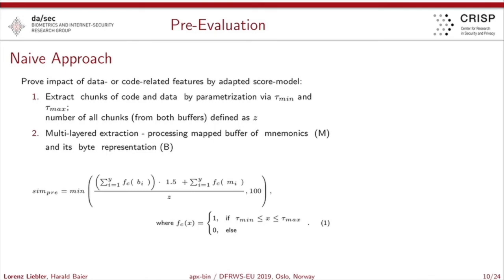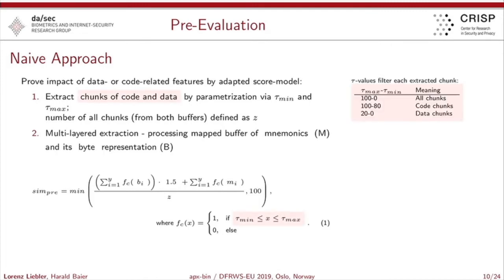We performed a pre-evaluation and introduced a very naive approach. We want to shift the focus to specific parts of extracted chunks. We parameterized the extraction phase so that we are capable of extracting only code chunks, only data chunks, or both. If we parameterize the thresholds to 100 and 0, we extract all chunks. If we parameterize 100 to 80, we focus only on code chunks. If we parameterize from 20 to 0, we consider only data chunks.